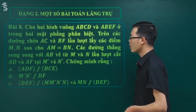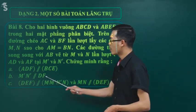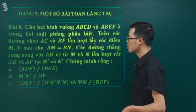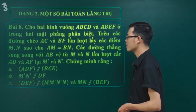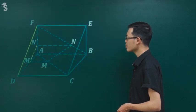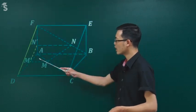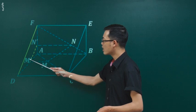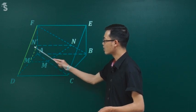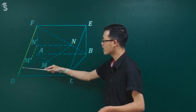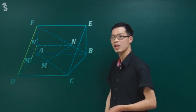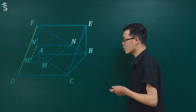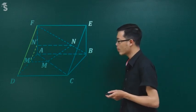Chúng ta tiếp tục nhìn lại vào ý B: chứng minh M'N' song song DF. Thấy song song thật - thế làm thế nào chứng minh được song song? Chúng ta sẽ sử dụng Ta-lét. Muốn song song được thì bây giờ ta xét tam giác ADF.